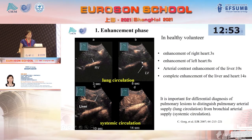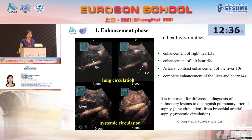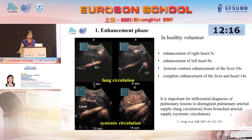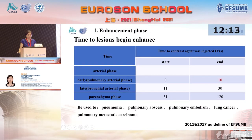Looking at an example in a healthy volunteer: the right heart enhances at 3 seconds, and the left heart enhances at 8 seconds. Between 3 and 8 seconds is the window for pulmonary circulation. The liver starts to enhance after 10 seconds, indicating entry into the systemic circulation. It is important for differential diagnosis of pulmonary lesions to distinguish pulmonary artery supply from bronchial artery supply. According to the guideline, 10 seconds is used as the cut-off value to differentiate early and late enhancement.